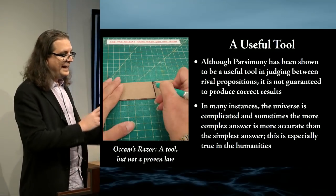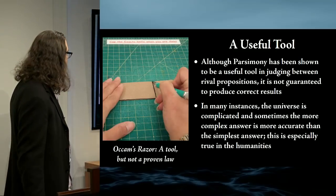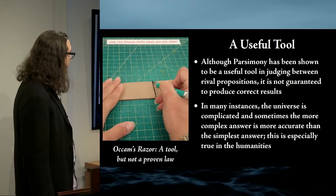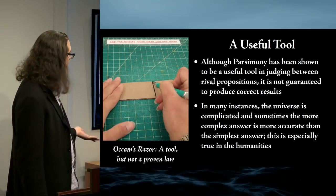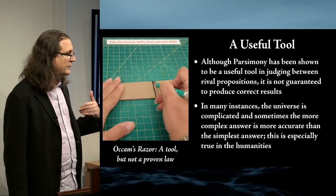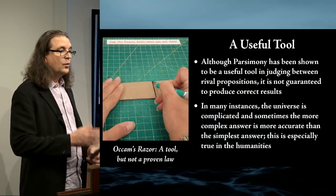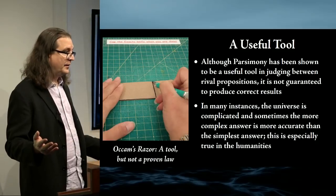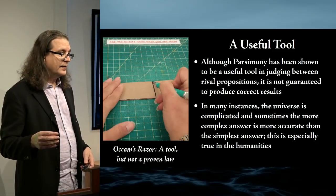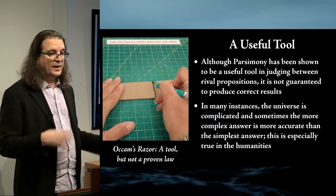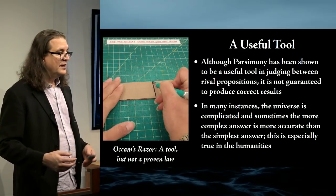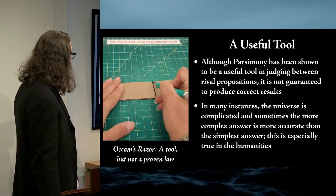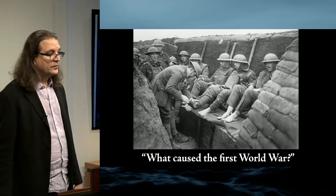This isn't like the principle of non-contradiction — where A can't also equal not-A — where we have a robust proof. In fact, we often find that the universe is complicated, and sometimes the more complicated answer is more accurate than the simple one. This is especially true in the humanities. In history, if you always use Occam's razor to reduce historical explanations, you end up with essentially the Marxist maxim that the answer to everything is always economics — it becomes reductionist.